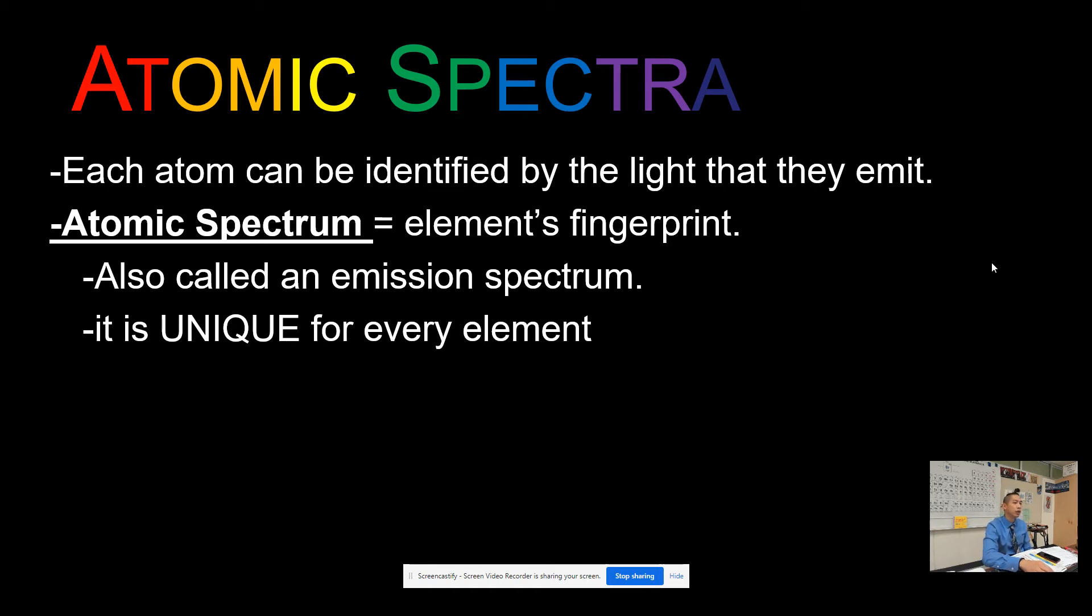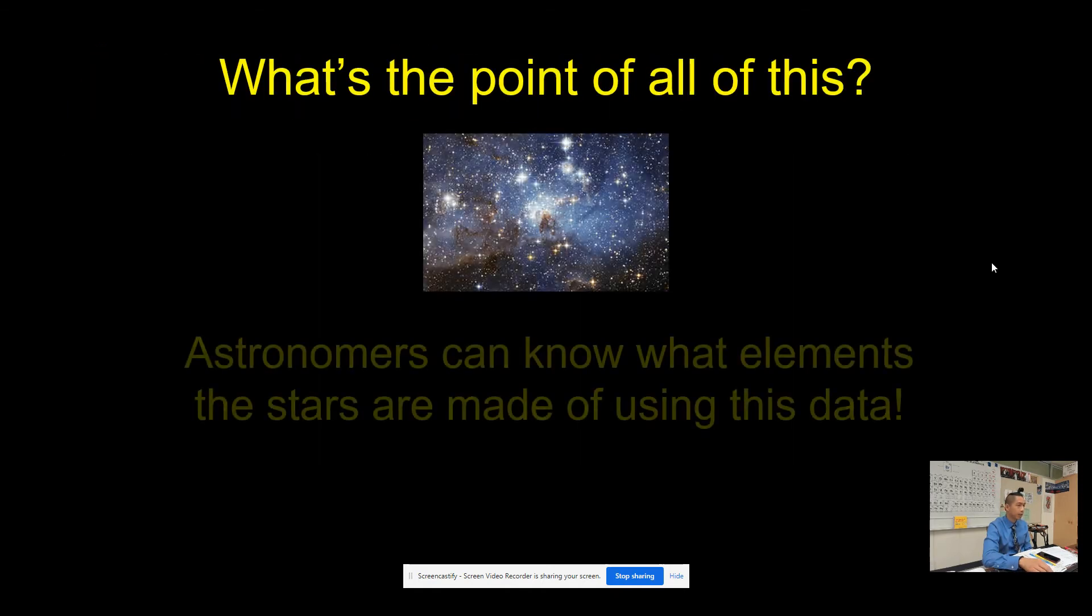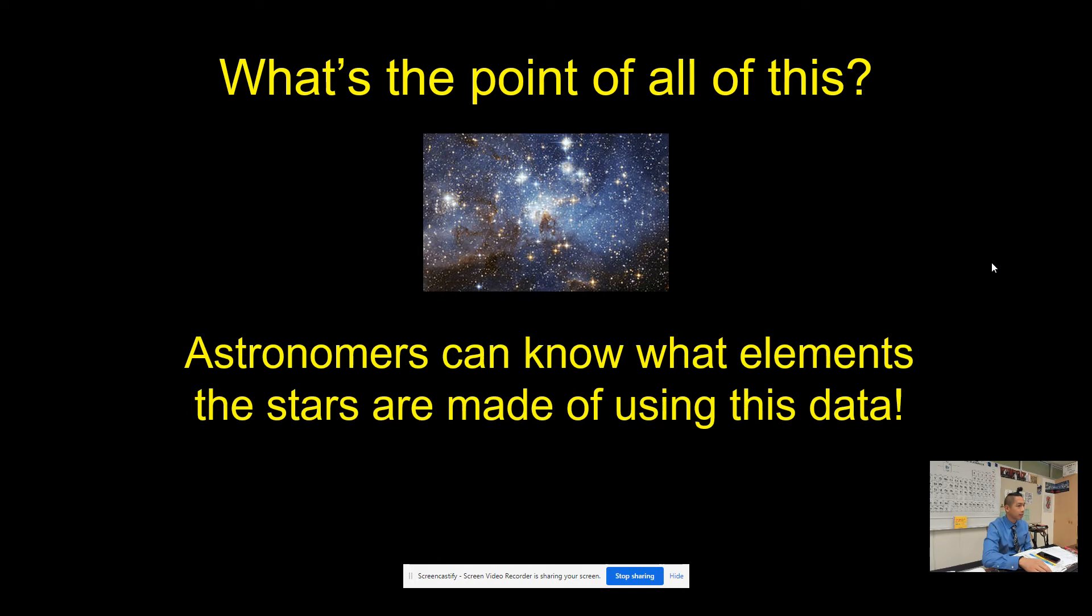So what's the point of all this? Astronomers can figure out, based on the energy and light emitted, what is out there in our universe. We can figure out what stars are made of and what elements are present in distant planets. All of that is handy.